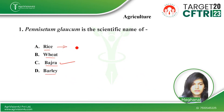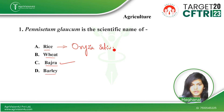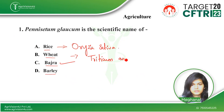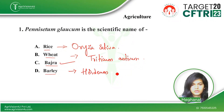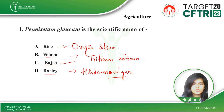For rice, the scientific name is Oryza sativa, and for wheat it is Triticum aestivum, and for barley it is — so the right option is bajra.